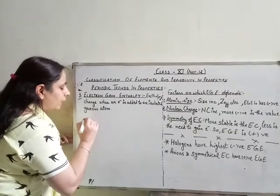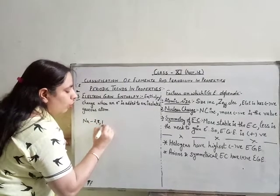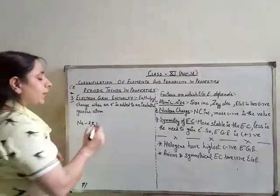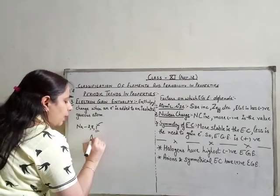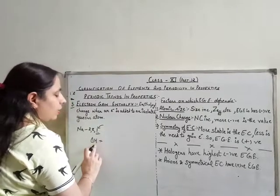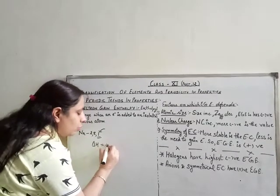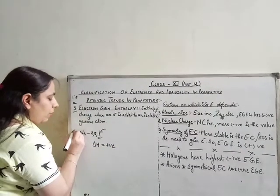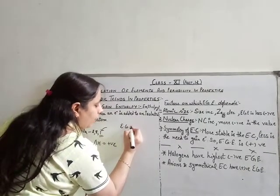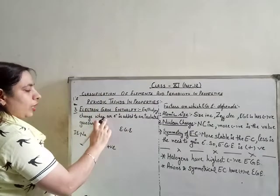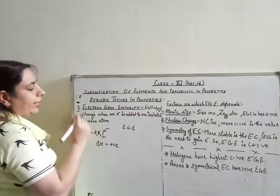In the case of ionization enthalpy, it is the energy required to remove the most loosely bound electron, so energy was supplied and the enthalpy change delta H was positive. But in the case of electron gain enthalpy, it is the energy released when an electron is added to an isolated gaseous atom.